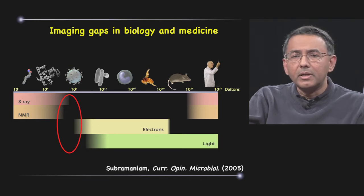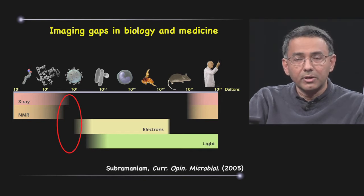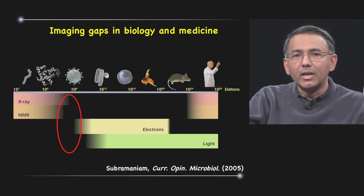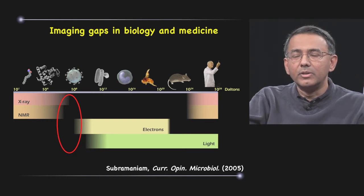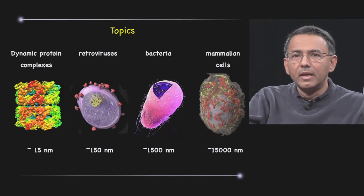which are typically too heterogeneous or too large to be analyzed using X-ray crystallographic methods or NMR spectroscopic methods, and also difficult to get at using conventional electron or light microscopic methods to get the kind of chemical details about how these molecule assemblies work.